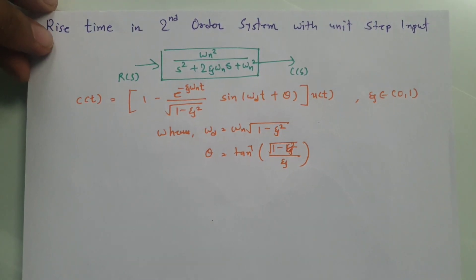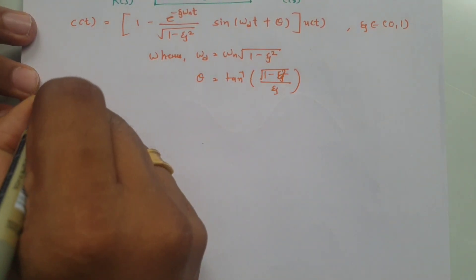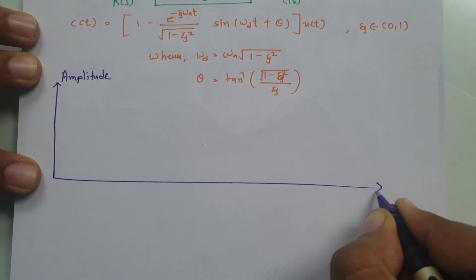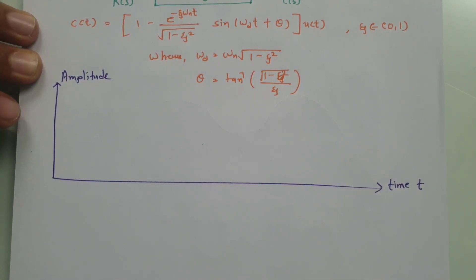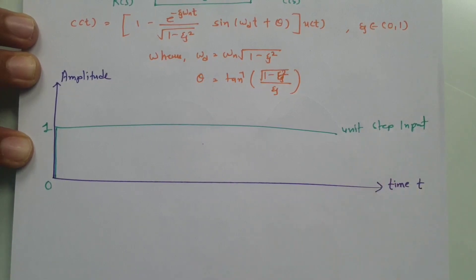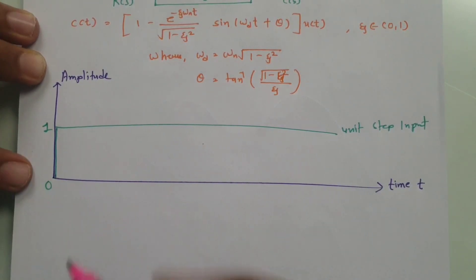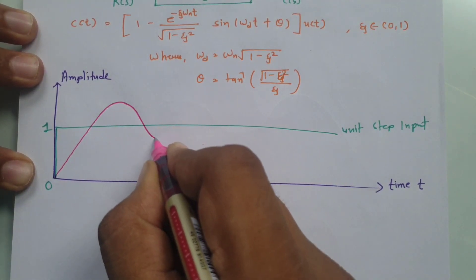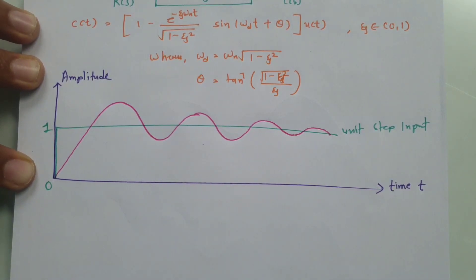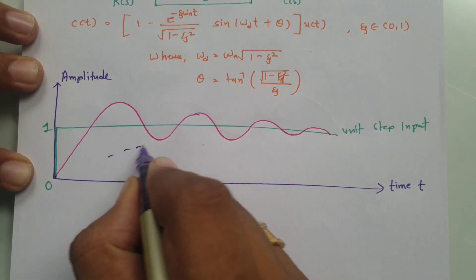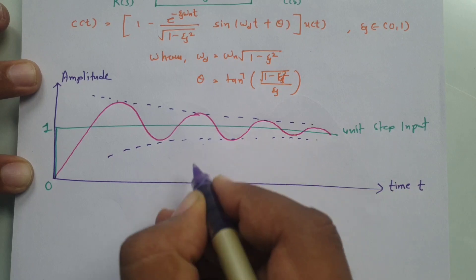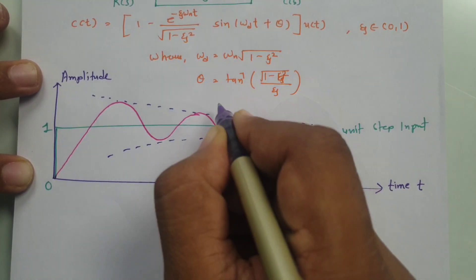If you observe this response graphically, the y-axis represents amplitude and the x-axis represents time. Our input is a unit step input, and the output response will oscillate as I have already explained in my previous video. You can observe the upper bound and lower bound of the response on the graph.